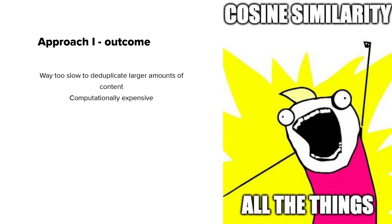First of all, it was super slow. Calculating it — there are dozens of questions — generating text embeddings for them and then actually calculating each one of those, it took forever. And because of all of this, it's also quite computationally expensive.